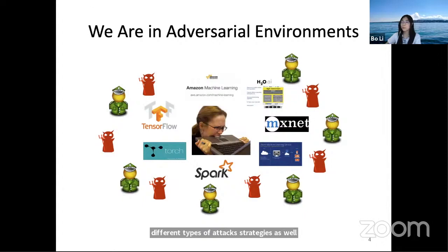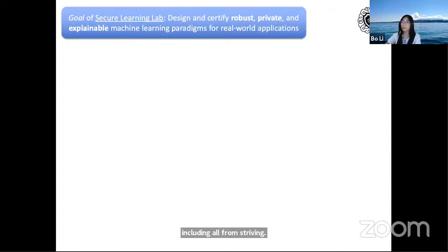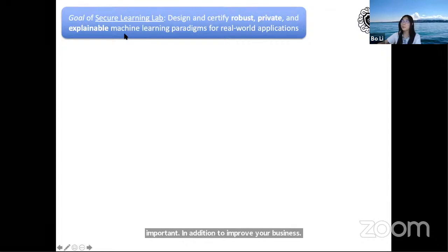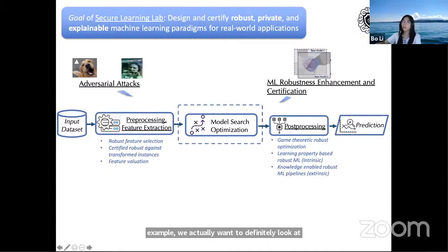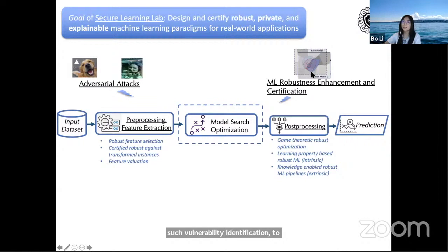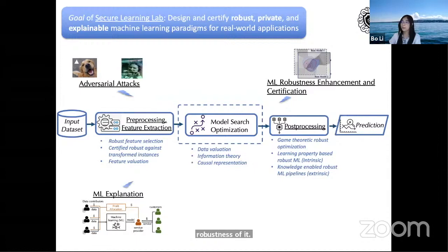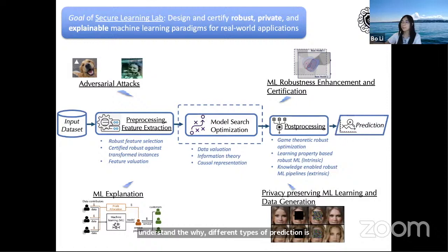Our lab's main goal is to develop certifiably robust, private, and explainable machine learning for different real-world applications. Taking a general machine learning pipeline as an example, we want to look at different types of adversarial attacks during training, testing, and deployment phases. Based on such vulnerability identification, we look at how to improve and certify robustness, understand why different predictions are made, and protect data — for example, data collected by autonomous vehicles on the road.